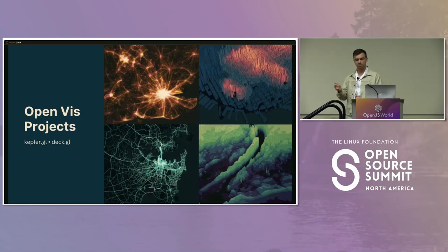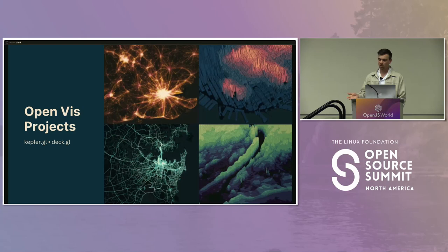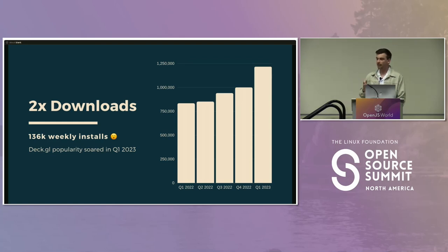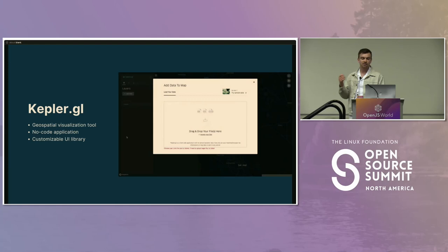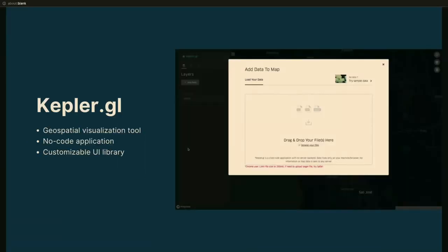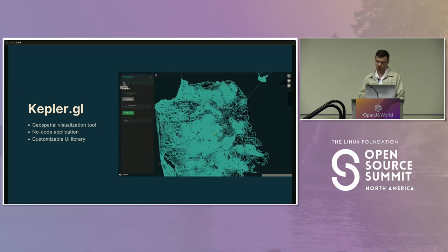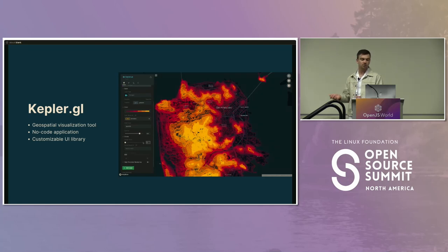Now let's dive into the projects we actually make for developers like you. We build a variety of JavaScript libraries that work incredibly well together and easily integrate into your existing tech stack. Our flagship framework, DeckGL, is one of the top web-based visualization libraries with over 136,000 weekly downloads, and it's doubling its growth compared to last year. KeplerGL is a web-based application for exploratory geospatial visualization, built on top of DeckGL and its companion VisGL frameworks.